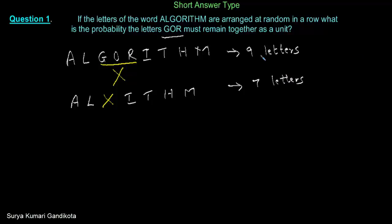In how many ways can these 9 letters be arranged? 9 letters can be arranged in 9 factorial ways. In a row, 9 letters can always be arranged in 9 factorial ways. And how about 7 letters? 7 letters can be arranged in a row in 7 factorial ways.